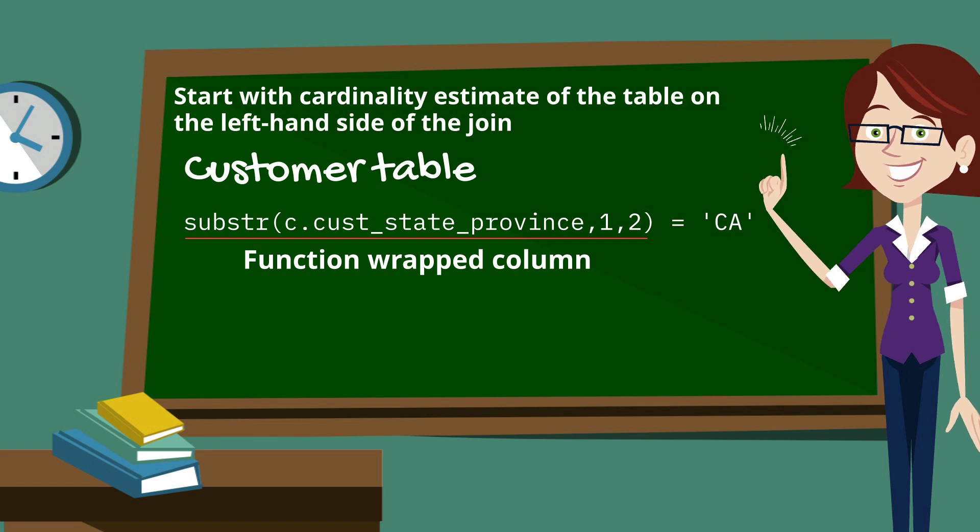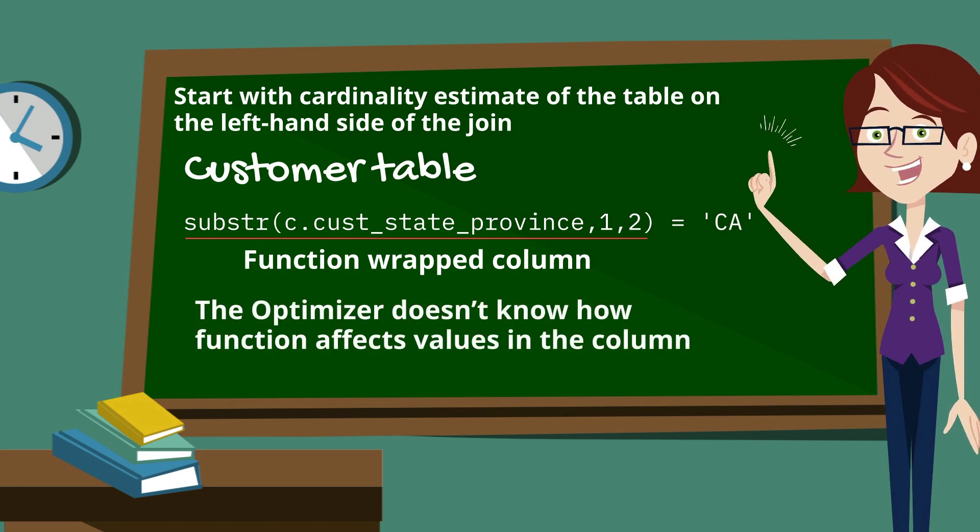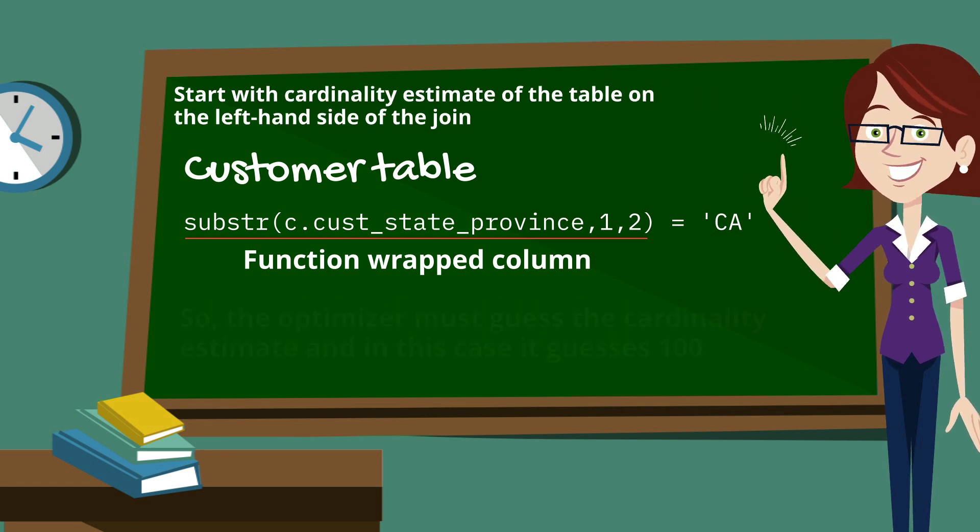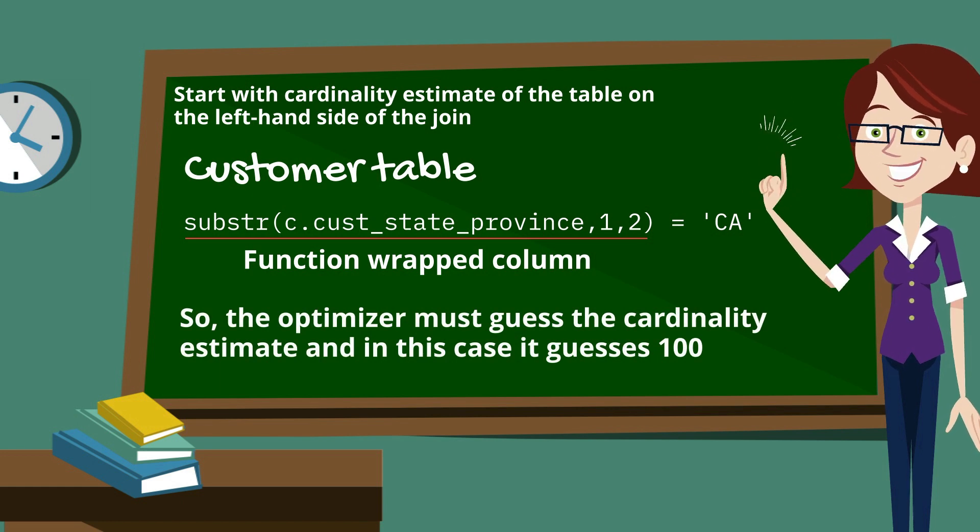And when you do that, the optimizer has no idea how that function, in this case, substring, is impacting the values inside in that column. And so the optimizer must guess the cardinality estimate instead of using the base column stats to work it out.